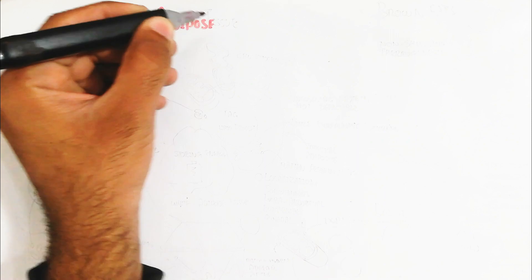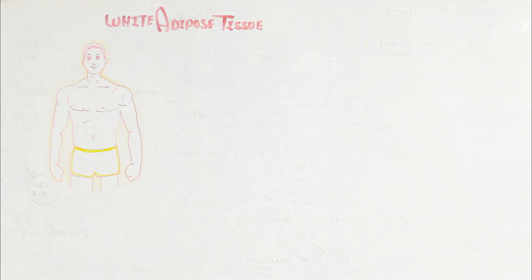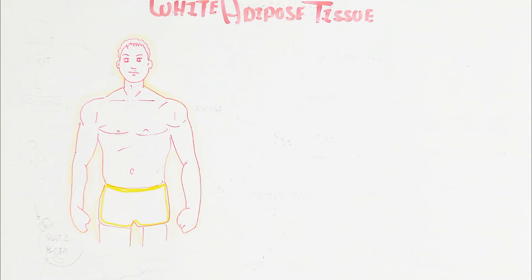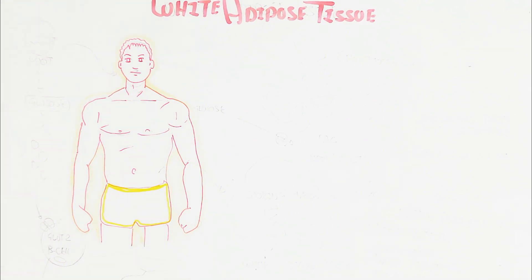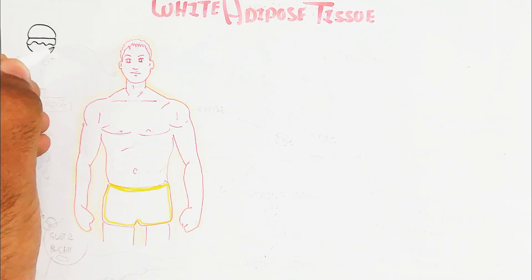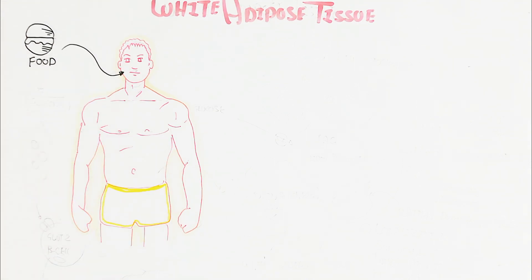First of all we will understand about the white adipose tissue and their characteristics. So the white adipose tissue is important for the storage of energy, glucose conversion into the adipose tissue, into the lipid.